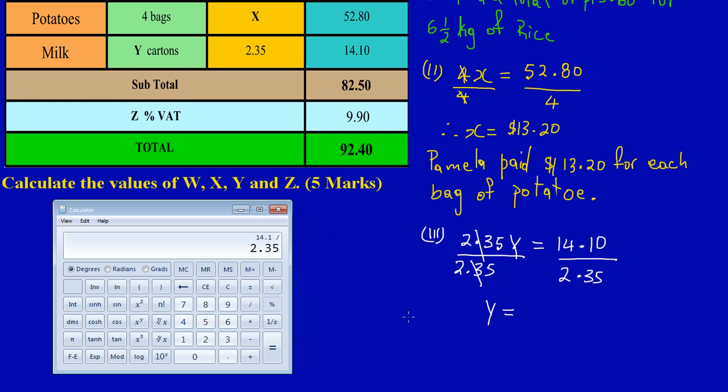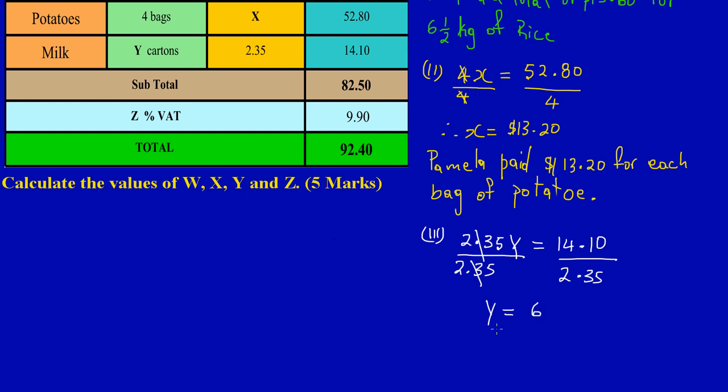We can now make our statement by saying, therefore, she purchased six cartons of milk. So here we have the fact that she purchased six cartons of milk when we found the value for Y.